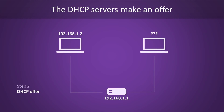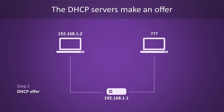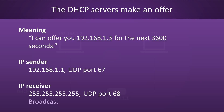Step 2 involves the servers offering an IP address to the new host. The way they do this is by broadcasting their offer to everyone on the current network, because they don't know where to find the new host. A typical DHCP offer message will say something like, 'I'm willing to give you this address for that amount of time.' The sender will be the DHCP server, and the receiver will again be the broadcast address. Note how the ports were flipped — the sender is UDP port 67, which is the server port, and the receiver is port 68, which is the client port.